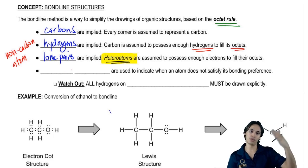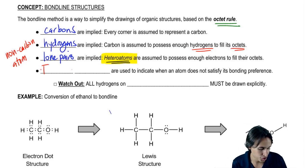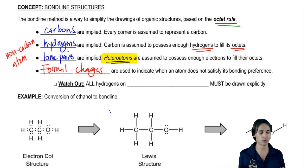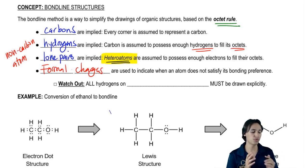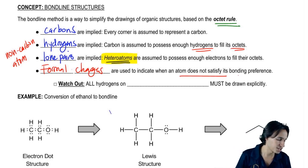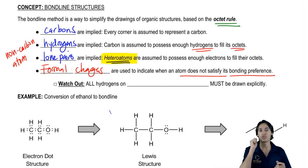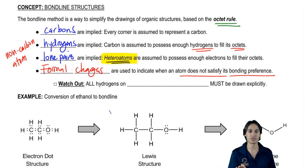We're just going to assume that they have enough lone pairs to fulfill their octet unless otherwise stated. And what we use for that is formal charges. Now that we know how to do formal charges, formal charges are a huge part of the bond line structure. We never draw lone pairs. We only draw formal charges. And we use formal charges when an atom does not satisfy its bonding preference. So if there's a messed up bonding preference, we use a formal charge. We don't actually draw the lone pairs.